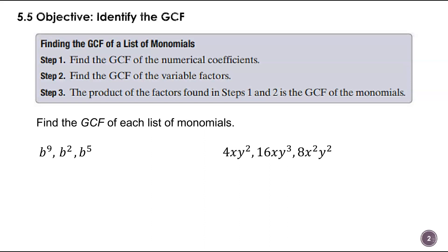When we're looking for the GCF, step one says find the GCF of the numerical coefficients. Step two, find the GCF of the variable factors. And then the product of the factors found in steps one and two is your GCF.